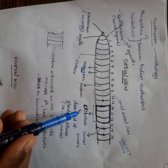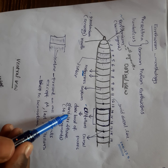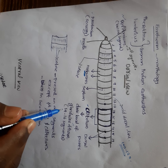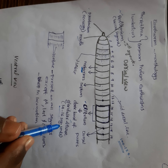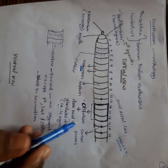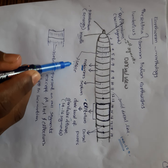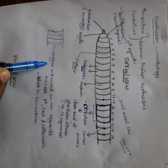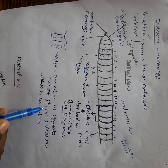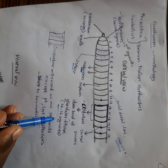Another structure is called clitellum. Clitellum is a dark band of glandular tissue found on segments 14 to 16 of the body. The clitellum will secrete something, which we will discuss later. We can also see another structure called setae. Setae are present on all segments of the body except the first, last, and clitellum segments (14 to 16).